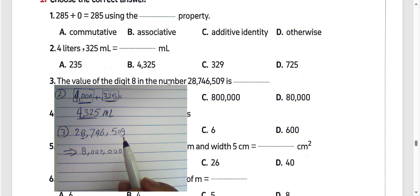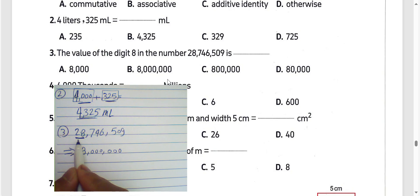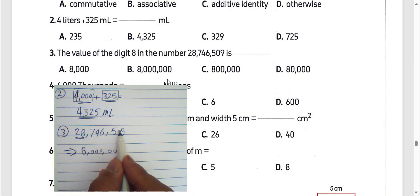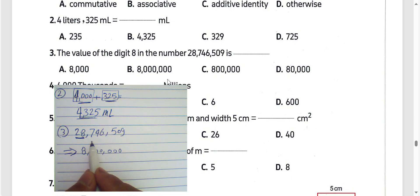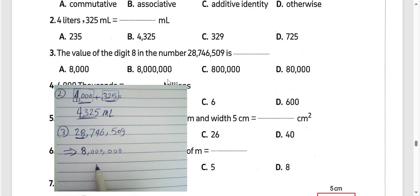Now we will solve question number 3: the value of the digit 8 in the number 28,746,509. The digit 8 lies in the millions place. So the place value of digit 8 will be 8 million. The answer 8 million shows letter B.